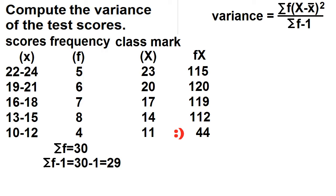Find the sum. The sum is 510. Then divide it by the total frequency. 510 divided by 30 is 17. This is our mean.